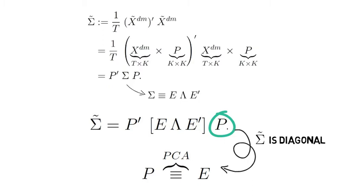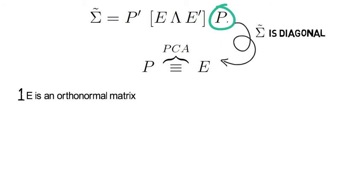So our rotation matrix is simply the eigenvector matrix. Now here's the reason. First, E is an orthonormal matrix. And second, if we choose E to be the rotation matrix, then sigma tilde will be diagonal. That's what we wanted.